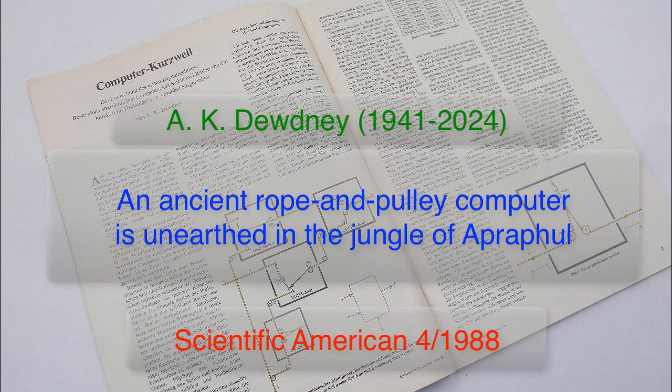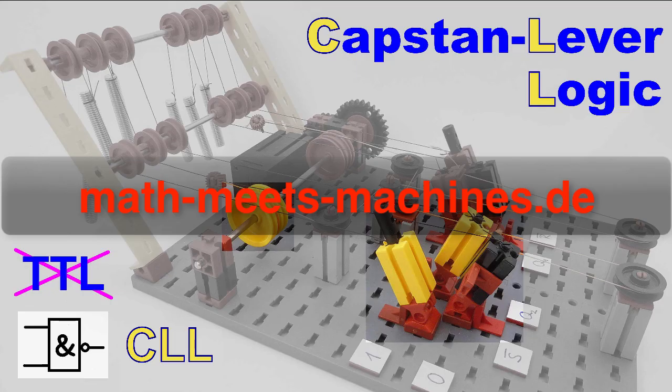The gates sketched in this article were not functional. It took me some 35 years to figure that capstans and levers are the key to make these seemingly foolish ideas work. So much for now. There will be certainly more videos about CLL in the next weeks. I hope you will join me again. Thanks for watching.